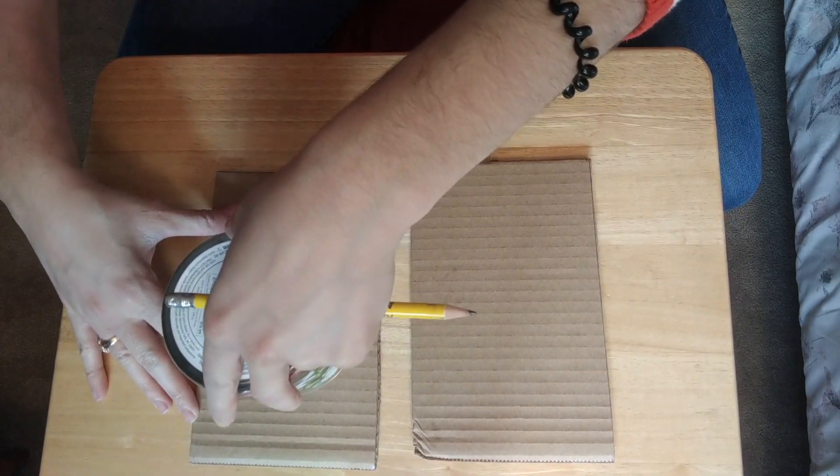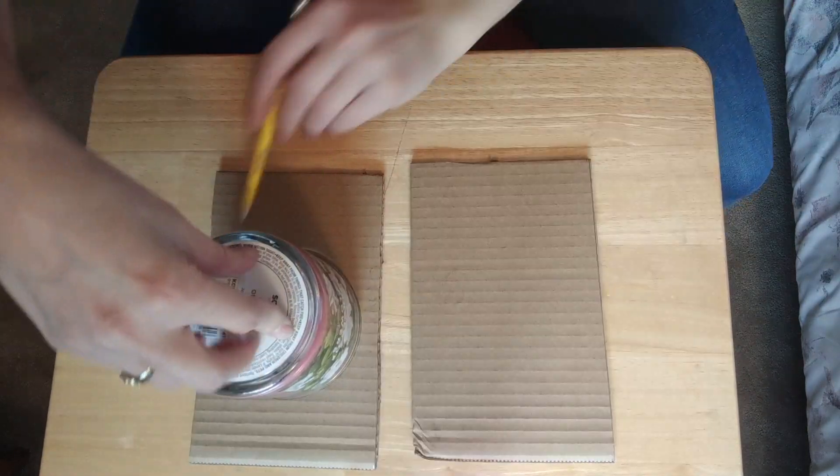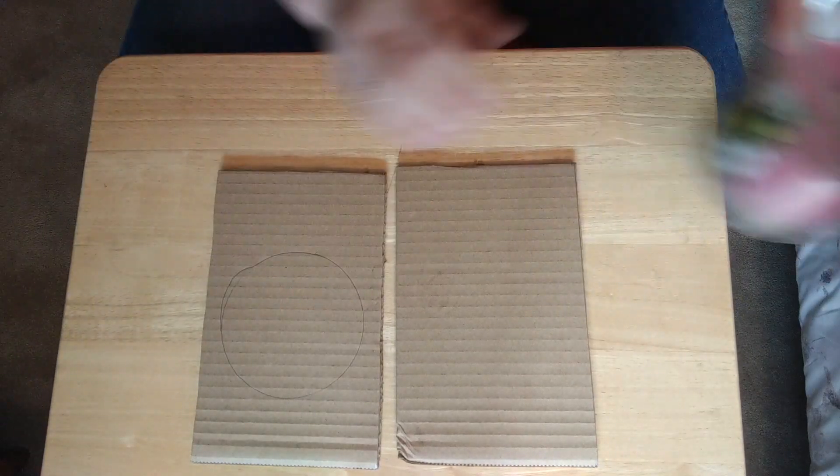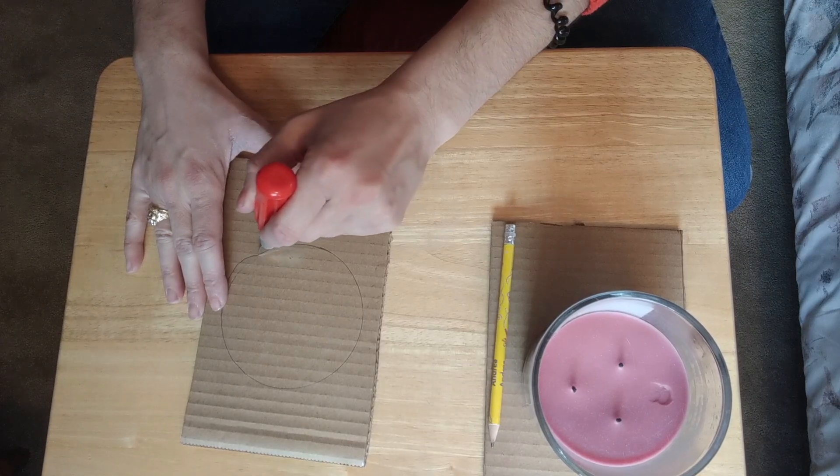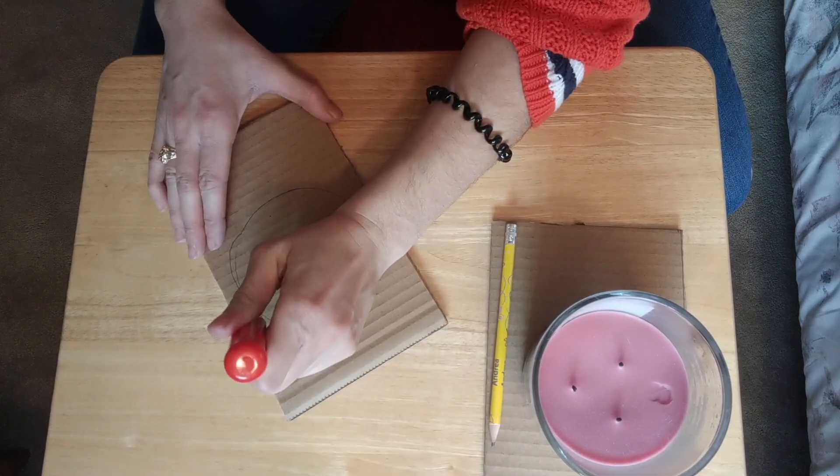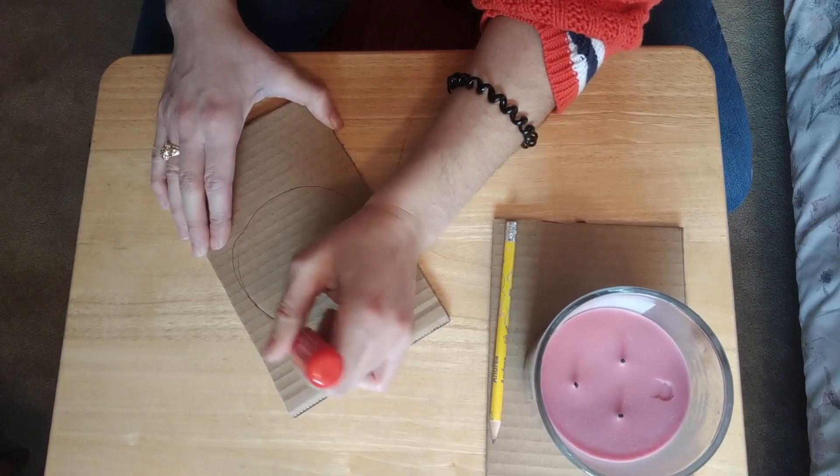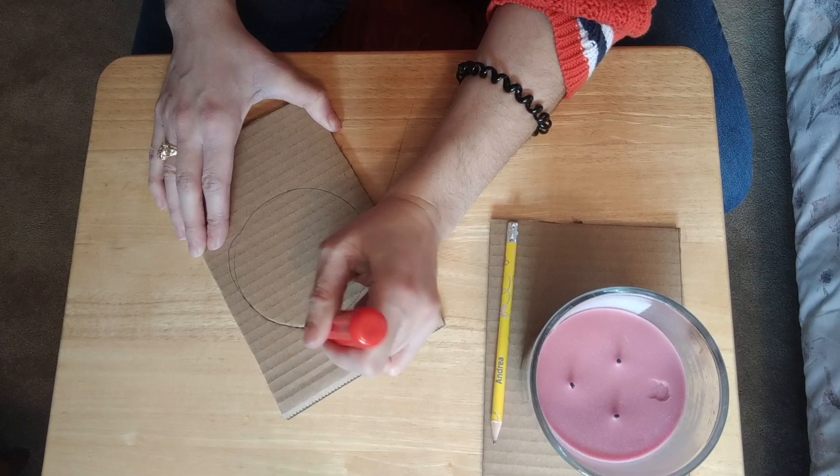I'm using a candle, so I'm just gonna place it on here and with a pencil trace that out. To cut it out, I am using an exacto knife. This is definitely something that we need adult supervision with. Scissors work fine too. We just want to be really careful with our exacto knives. I'm just gonna cut around my circle.